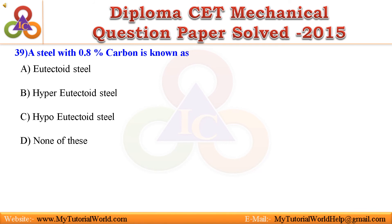Question 39. A steel with 0.8% carbon is known as: A. Eutectoid steel. B. Hyper eutectoid steel. C. Hypo eutectoid steel. D. None of these. Answer is: Eutectoid steel.